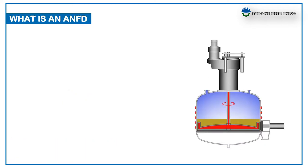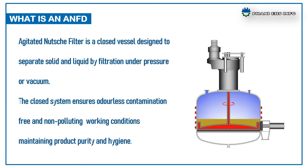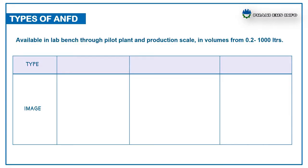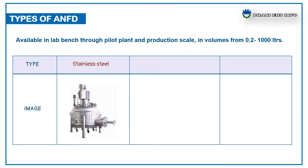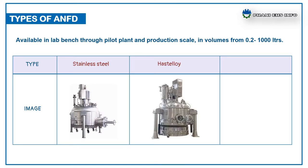An agitated nutsche filter dryer is a closed vessel designed to separate solid and liquid by filtration under pressure or vacuum. The closure system ensures odorless, contamination-free and non-polluting working conditions, maintaining product purity and hygiene. Based on the MOC, there are different types of ANFDs used in production — for example, stainless steel, Hastelloy alloy, and glass-lined.